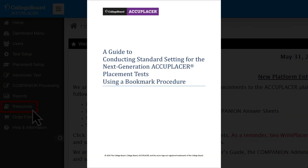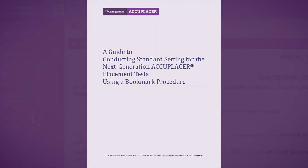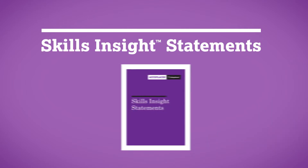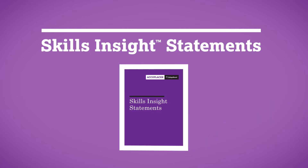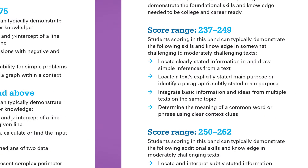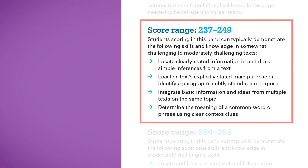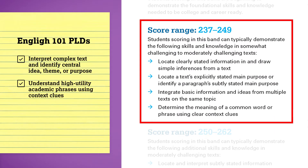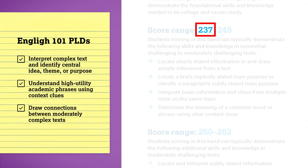While the bookmark method is the gold standard and strongly recommended, there are other alternative options. The second way to set preliminary placement scores is to use the Accuplacer Skills Insight Statements. If the list of prerequisite skills and abilities — the PLDs — for a college course closely matches the Skills Insight Statements for a particular score range, the lower part of that range may be considered as the initial placement score.